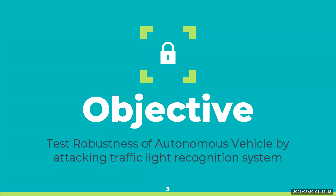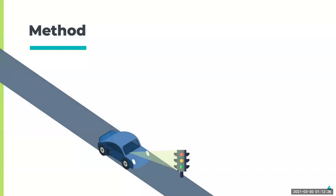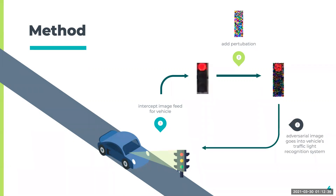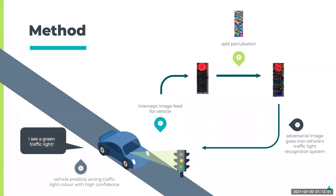It is therefore important that autonomous vehicles cannot be compromised in this way, which leads me to my objective. I want to test the robustness of autonomous vehicles by attacking the traffic light recognition system. To do this, we intercept the image feed of the vehicle and apply a perturbation to generate the adversarial image. We then feed the adversarial image back into the vehicle's traffic light recognition system, and what we want to happen is for the vehicle to predict the wrong traffic light colour with high confidence. This means that we have compromised the vehicle in a successful way.